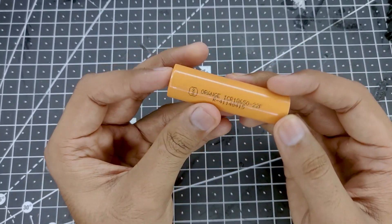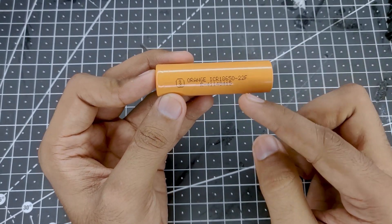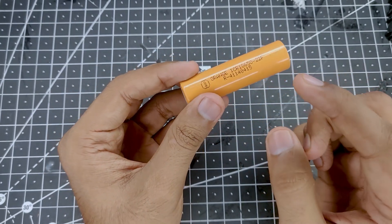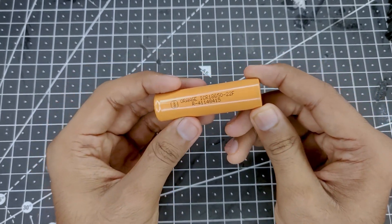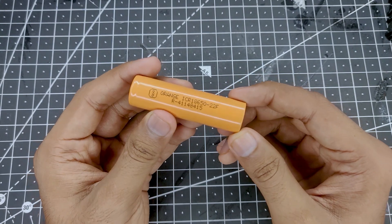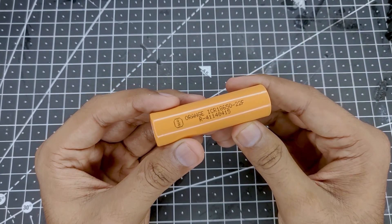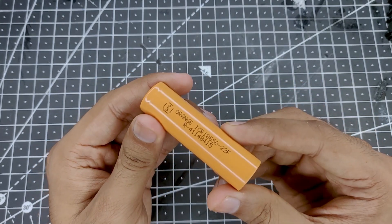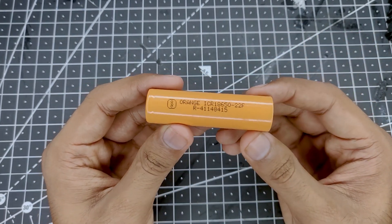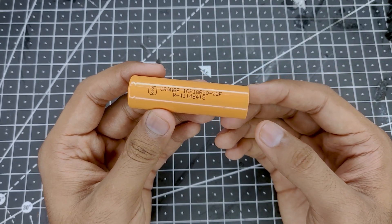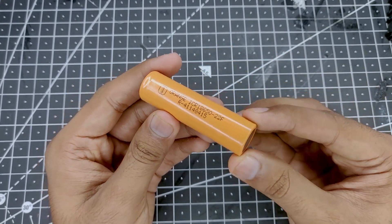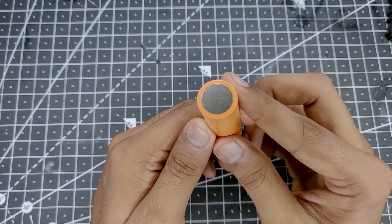This is a simple 18650 3.7V battery, and one thing good about this battery is that it's actually a lithium-ion battery so it's slightly more durable than lithium polymer battery. It's basically the same as lithium polymer - 3.7V is their optimal voltage and maximum charge is 4.2 volts.